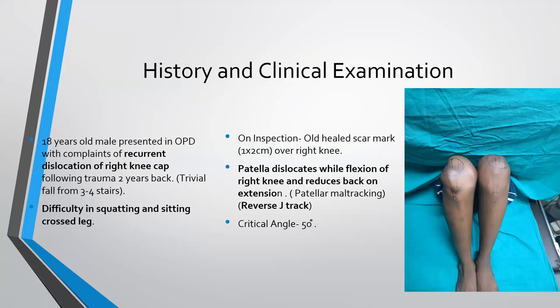An 18-year-old male presented with a complaint of recurrent dislocation of right knee cap following trauma 2 years back, and there is difficulty in squatting and sitting cross-legged. On inspection, we can see there is an old healed scar mark of 1-2 cm over the right knee. The patella dislocates while flexion of the right knee and reduces back on extension. Following the mild tract, that is a reverse J tract, and the critical angle was found to be 50 degrees.